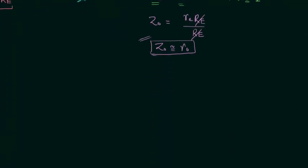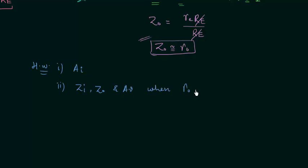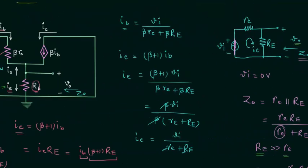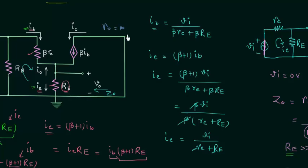Calculation of current gain is homework for you. You also have to calculate the input impedance, output impedance, and voltage gain when RO is not equal to infinity. In this analysis we considered RO equal to infinity — RO is the output resistance in the RE model of transistor, and it was not included in the equivalent model. You can determine all parameters with RO finite, and that is the homework problem. Post your answers in the comment section. See you in the next lecture.